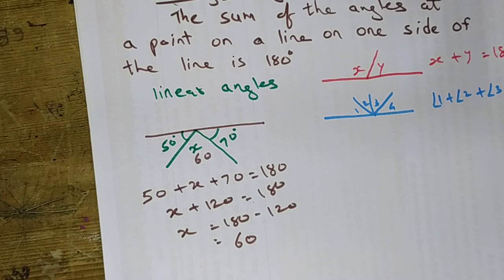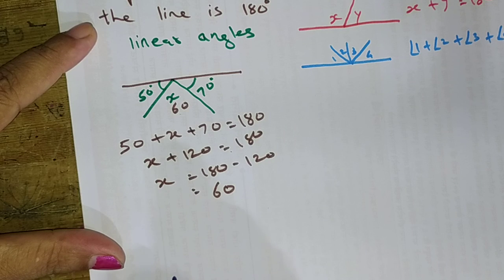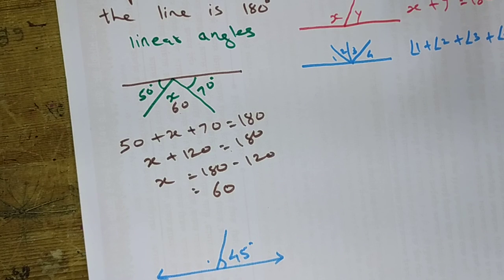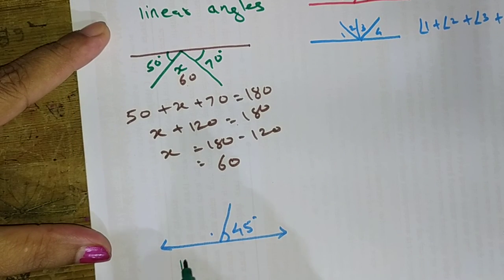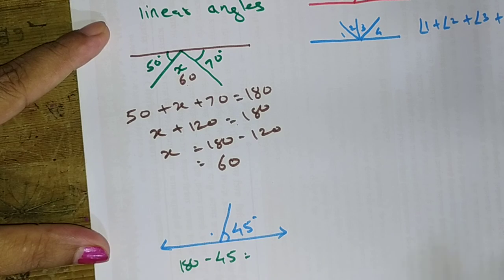Sometimes these examples can be a little bit complicated and some are easy. Let us try one more example. If this is a straight line and on this straight line only one angle is given — 45 degrees — and you have to find the other angle, it is simple: 180 minus 45 gives the required answer.